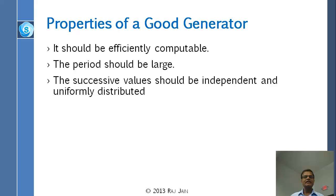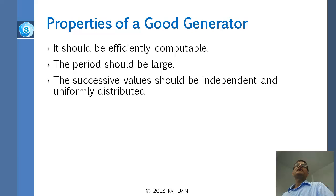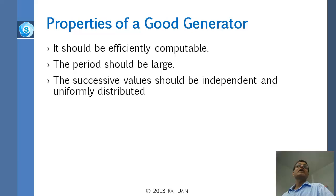So what makes a good generator? First, it should be efficiently computable — we are going to do millions of these in a simulation, so you don't want a very complicated formula with exponentiation or division. Second, the period should be large — you don't want the same number repeating every tenth iteration. Third, successive values should be independent and uniformly distributed. They are statistically independent in the sense that when you try to compute the correlation, it is very, very low. And uniform means every value between 0 and 1 is equally likely.